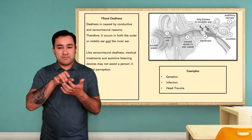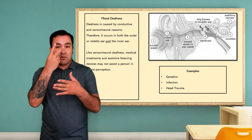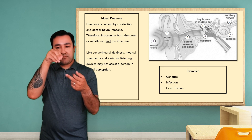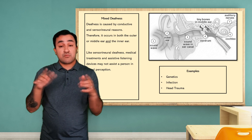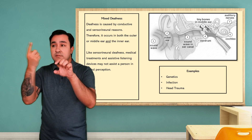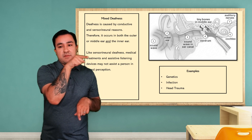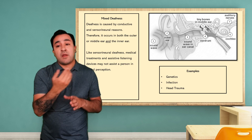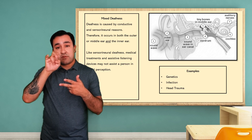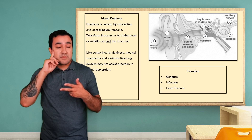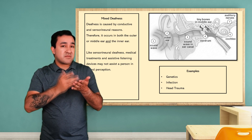Mixed deafness is exactly as it seems. This is deafness that is both conductive and sensorineural. Therefore, the cause of deafness is happening in both the outer or middle ear and the inner ear. In these cases, just like sensorineural deafness, hearing aids and other medical treatment will most likely not assist the person in perceiving sound.